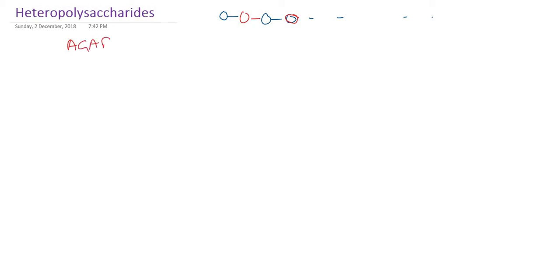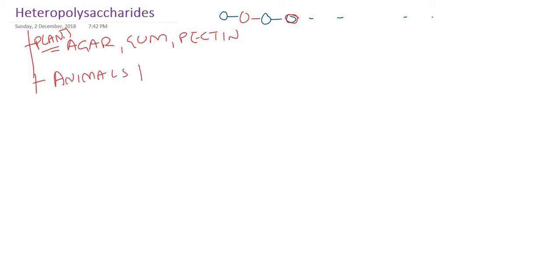Hi everyone. In this presentation we are going to study about heteropolysaccharides. We already learned that heteropolysaccharides mean they contain different sugars — two or more different sugars. Heteropolysaccharides occur in plants and in animals. In plants you can have examples of agar, gum, and pectin. But in animals, heteropolysaccharides — especially in human beings — are called glycosaminoglycans.